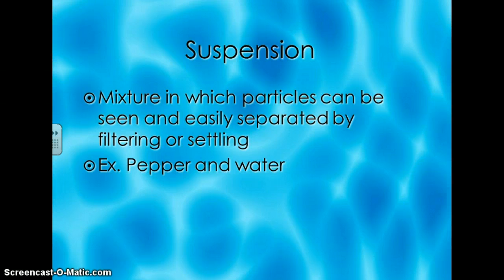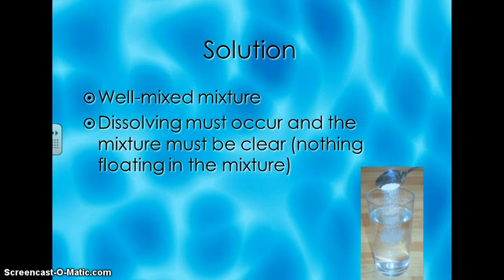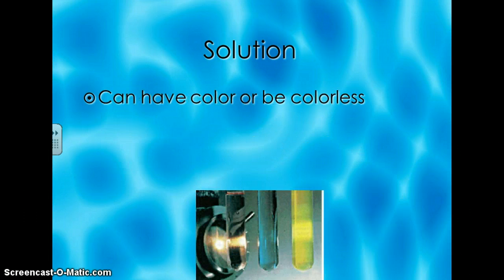The next type is a solution. A solution is a mixture that's very well mixed. In order for a solution to take place, dissolving has to occur, and the mixture must be clear. Now, this doesn't mean colorless — it just means clear, with no particles or chunks floating in it. Solutions can have color or be colorless, as you can see from the three test tubes in this picture: one is clear, one is bluish-green, and one is yellow, but they're all clear because there's nothing floating in them.